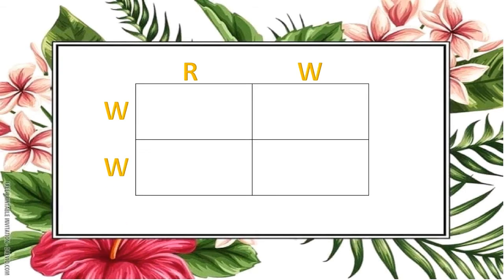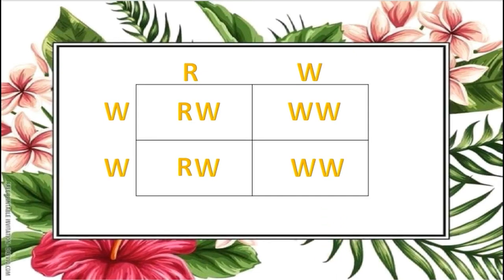May it be alleles of one parent on top of each column or alleles of another parent on the side of each row. So R is crossed with W and we get RW. R is crossed with W and we get RW.